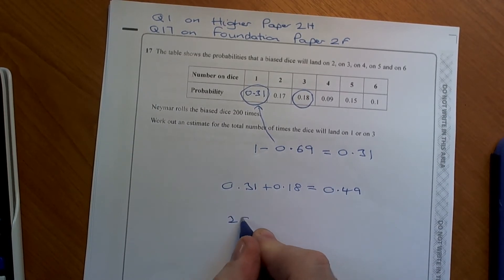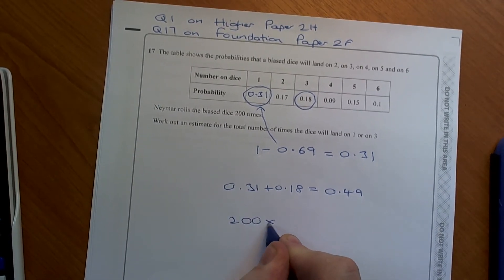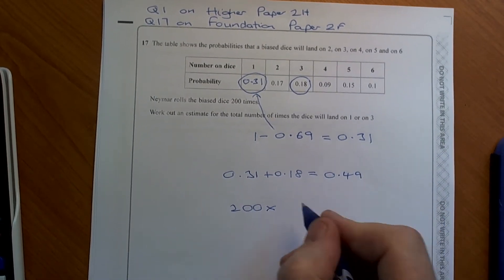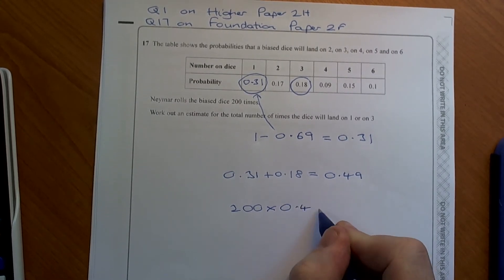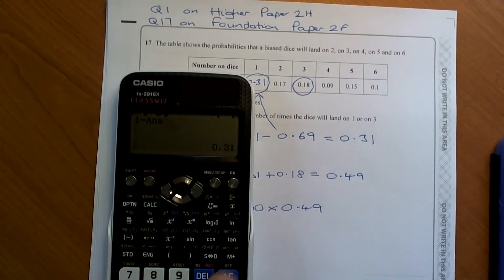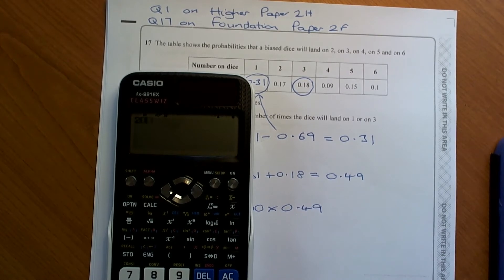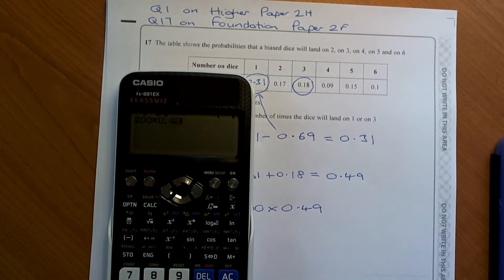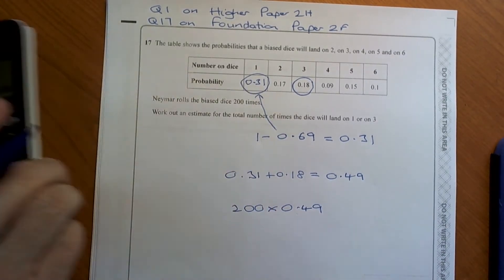So he rolls the dice 200 times, so it's going to be 200 times this probability times 0.49. So if we do that on the calculator, 200 times 0.49 and we get 98.